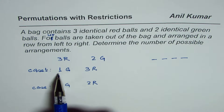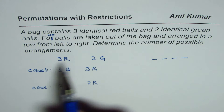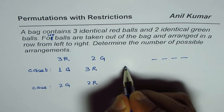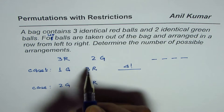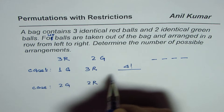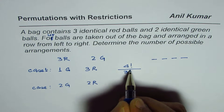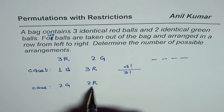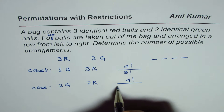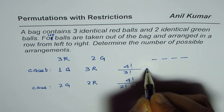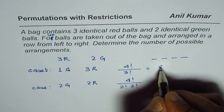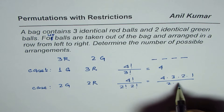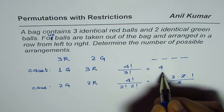To select one green and three red: we are making a selection of four, so it is 4 factorial divided by 3 factorial — giving us 4. For selecting two green and two red to make it four, it will be 4 factorial divided by 2 factorial times 2 factorial. That is 4×3×2×1 divided by 2×2, which gives us 6.